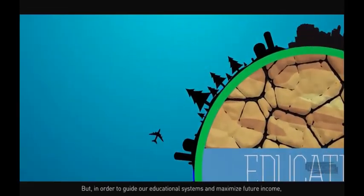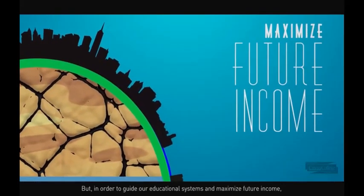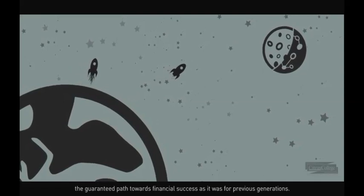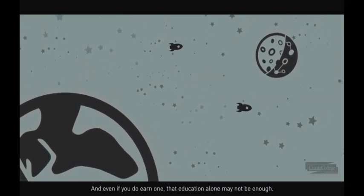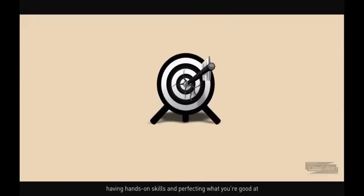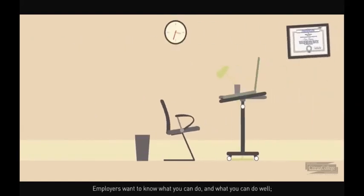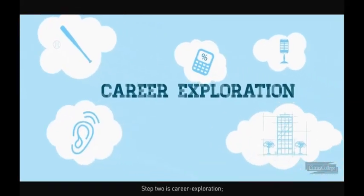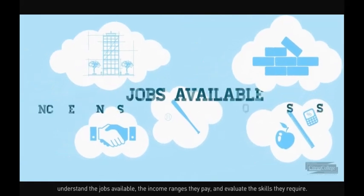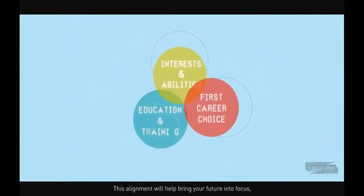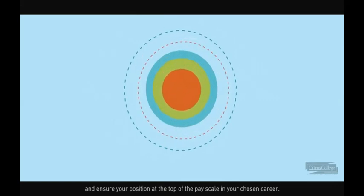Education is core to our economy. But in order to guide our educational systems and maximize future income, we must understand the misalignment between education and our workforce. The university degree is no longer the guaranteed path towards financial success as it was for previous generations. And even if you do earn one, that education alone may not be enough. In today's highly technical, knowledge-based economy, having hands-on skills and perfecting what you're good at can be more valuable than getting a degree in something simply to get one. Employers want to know what you can do and what you can do well, not just what degree hangs on your wall. Career exploration: understand the jobs available, the income ranges they pay, and evaluate the skills they require. Identifying is to align your interests and abilities with your first career choice and the education and training you'll need. This alignment will help bring your future into focus and ensure your position at the top of the pay scale in your chosen career.